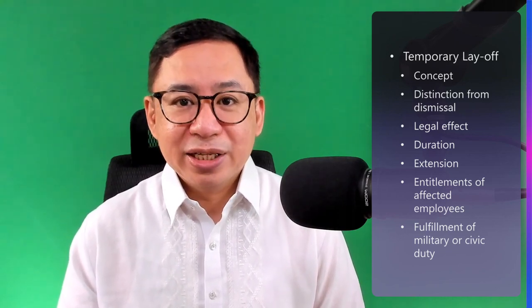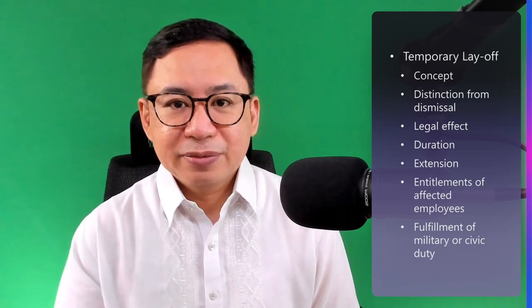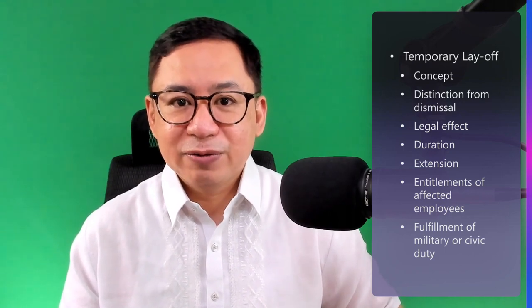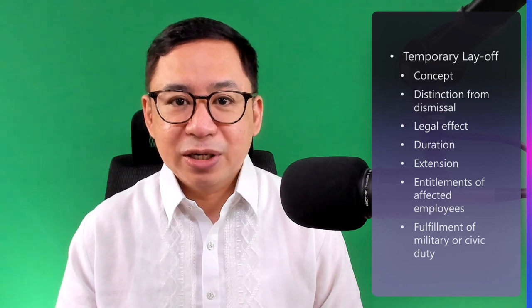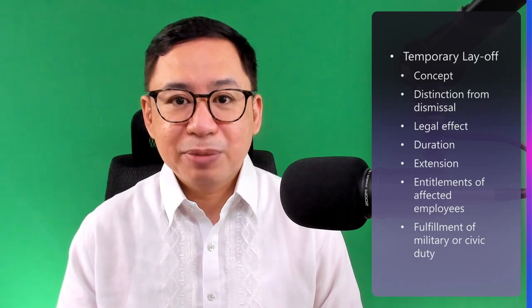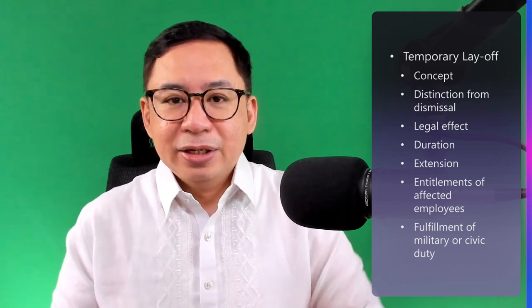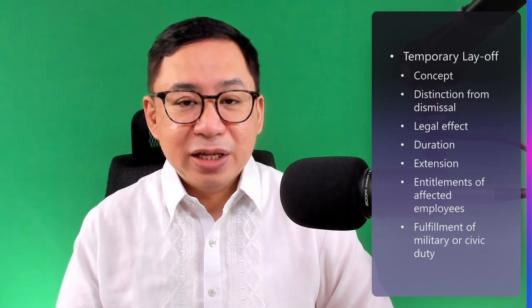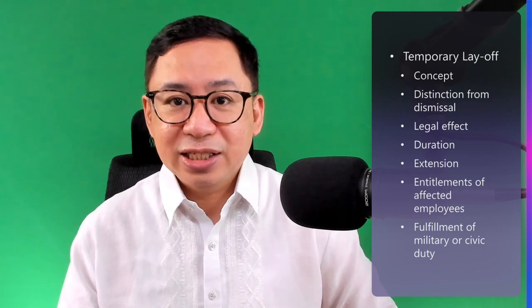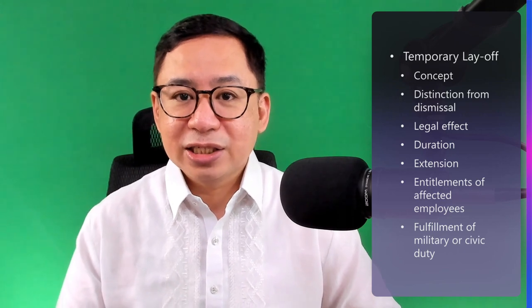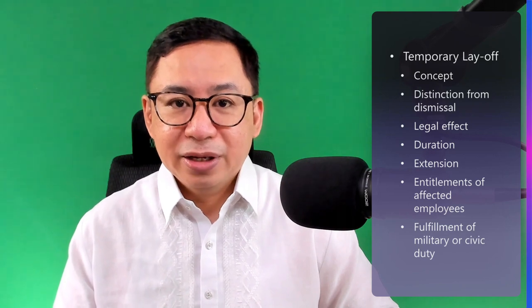Note the entitlements of the employees affected by the permanent closure. Number one, if closure is done in good faith, separation pay of at least one-month pay or one-half-month pay for every year of service, whichever is higher, unless the closure was due to serious business losses, in which case the employees are not entitled to separation pay. Number two, if closure is done in bad faith: wages during the six-month period of closure and separation pay of at least one-month pay or one-half-month pay for every year of service, whichever is higher. Fulfillment of a military or civic duty: if an employee is called upon for military or civic duty, his employment will be suspended for the duration of such civic or military duty even if such duty exceeds six months. However, in order to keep his employment, the employee must signify his desire to resume his work not later than one month from his discharge from the military or civic duty.